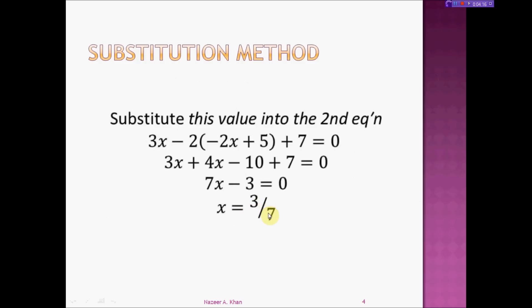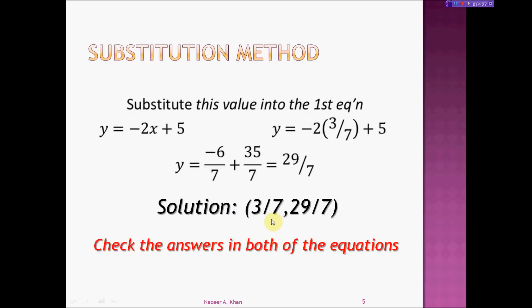Now I'm going to take this x value and substitute it back into the original equation that I isolated y for. I'm going to substitute the x value into that: y = -2(3/7) + 5. I'm going to multiply this out and simplify it: -2 times 3/7 gives -6/7.